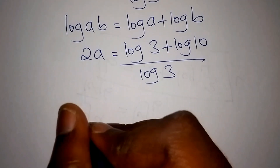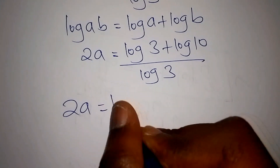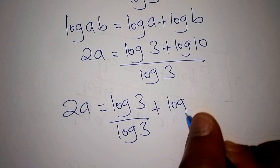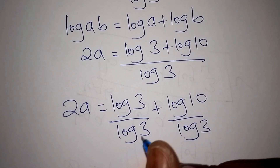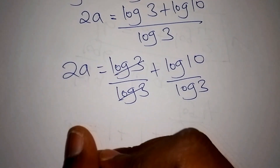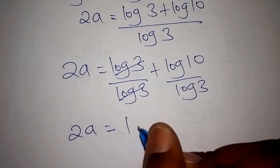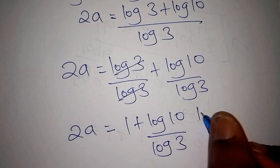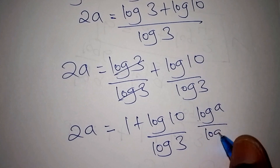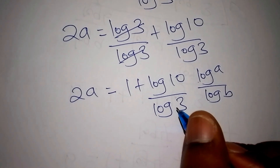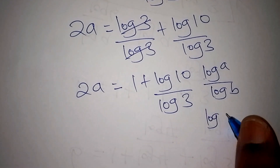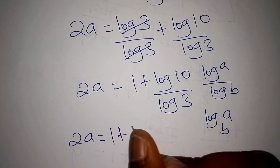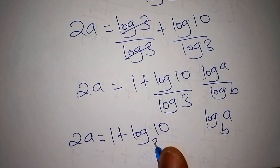We divide both sides by log of 3, giving 2A equals log 3 over log 3 plus log 10 over log 3. Log 3 and log 3 cancel, so 2A equals 1 plus log 10 over log 3. Recalling that log of A over log of B equals log of A to the base B, we get 2A equals 1 plus log of 10 to the base 3.